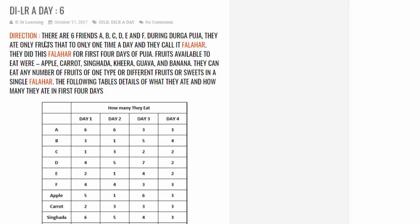The question is: there are 6 friends A, B, C, D, E and F. During Durga Puja they ate only fruits, one time a day, and they call it Falahar. So Falahar is nothing but a fruit meal. They did this Falahar for the first 4 days of the Puja, so we have data for the first 4 days.